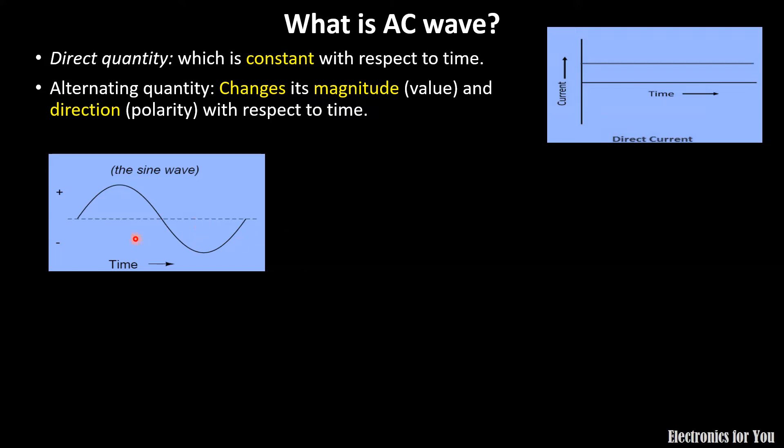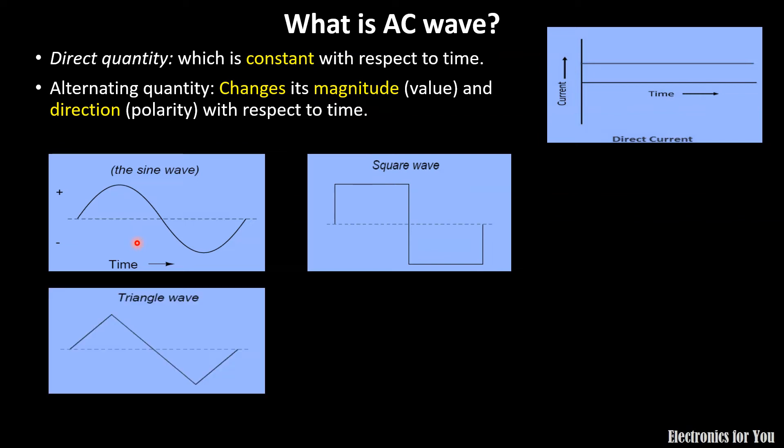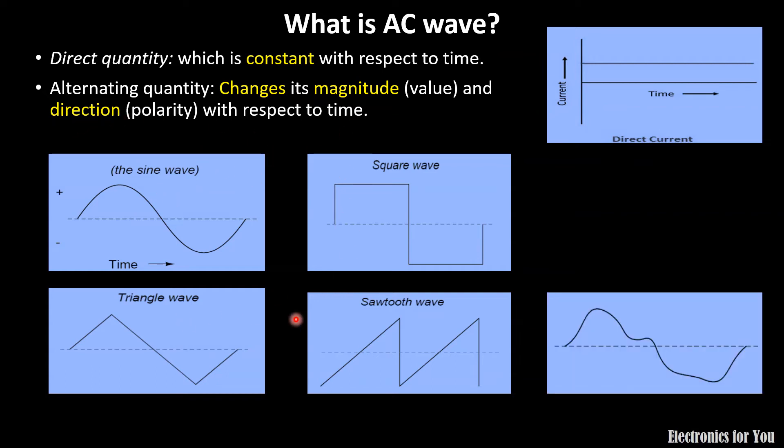This is not the only quantity which is alternating, but square wave, triangle wave and sawtooth wave are also examples of alternating quantity. I have already explained in my previous video. All these quantities, sine wave, square wave, triangular wave and sawtooth wave, can be expressed mathematically. Whereas, a random wave cannot be expressed mathematically. So this is also an example of AC wave.